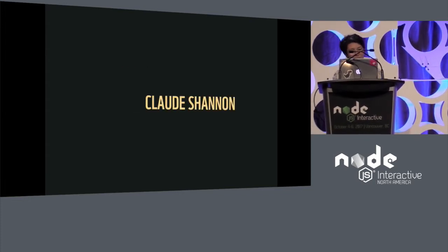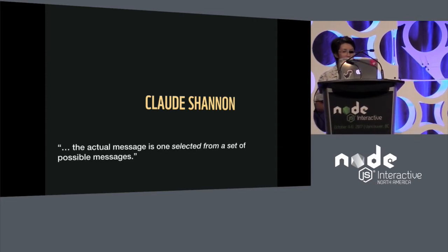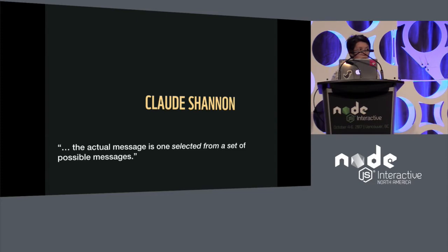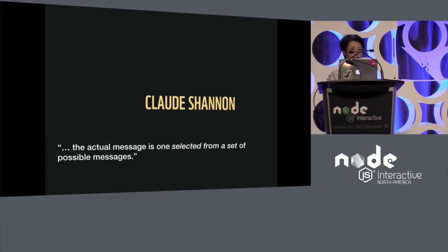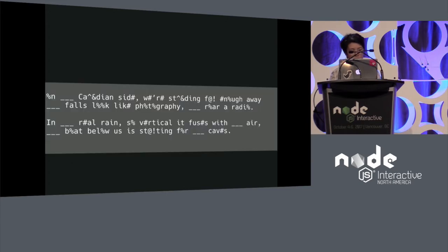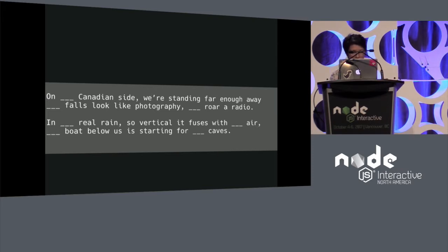We're going to start with Claude Shannon again. In the beginning of his seminal essay, he writes: 'The actual message is one selected from a set of possible messages.' Shannon observed that the English language has a certain predictability. For example, if you have the letter Q, you know definitely that the letter U will follow. Similarly, if you have a longer sequence of consonants, it is highly likely a vowel will follow. Here, in this passage from a poem, I've marked out a few letters. From our knowledge of English grammar, we might derive that single letters following a consonant are vowels, and we can probably guess that an often-recurring three-letter word is 'the,' and fill in the blanks to get the full message.